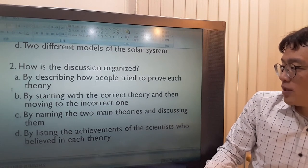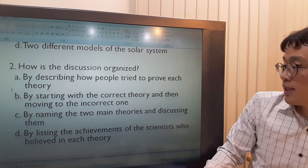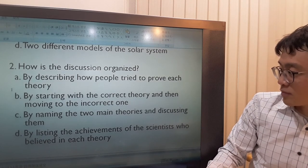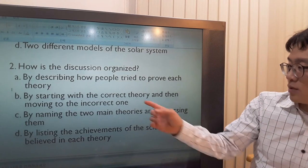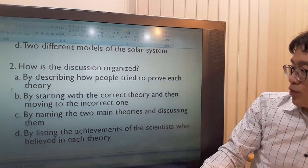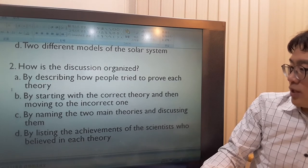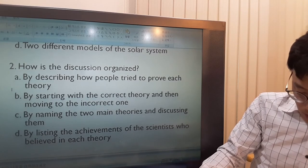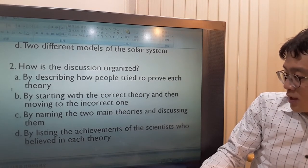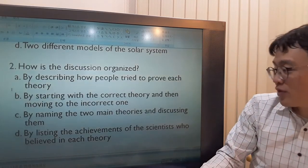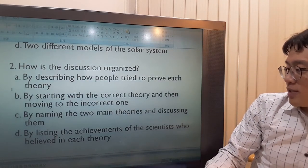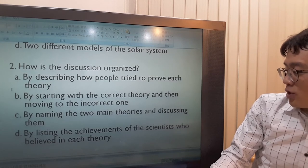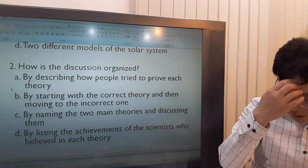B - By starting with the correct theory and then moving to the incorrect one. Is this right? The correct one was heliocentric, but that was at the back part. So it's the other way around. They presented the incorrect one first and then to the correct. So B is not the answer. D - By listing the achievements of the scientists who believed in each theory. What is achievement? Achievement is a great thing that someone did. They didn't list the achievements of the scientists who believed in each theory, although they have mentioned who the scientist was who supported that theory.